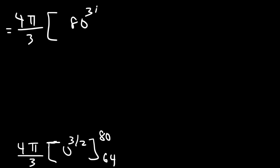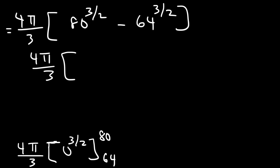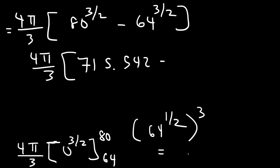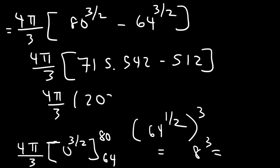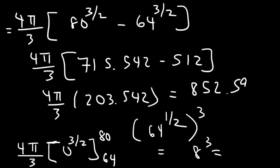So we're going to have 80 raised to the 3/2 minus 64 raised to the 3/2. 80 to the 3/2 is approximately 715.542. For 64 to the 3/2, that's the square root of 64 which is 8, and 8 to the 3rd is 512. So 715.542 minus 512 is about 203.542. Multiplying by 4π/3, we get approximately 852.5947, which is the surface area of revolution rotated about the x-axis.